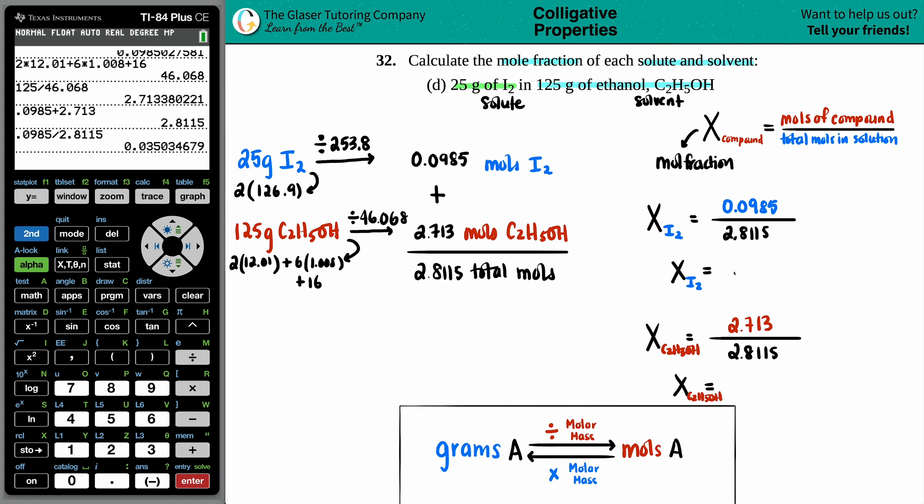And I get 0.035. And then we'll do the other one. 2.713 divided by 2.8115. And I get 0.964.